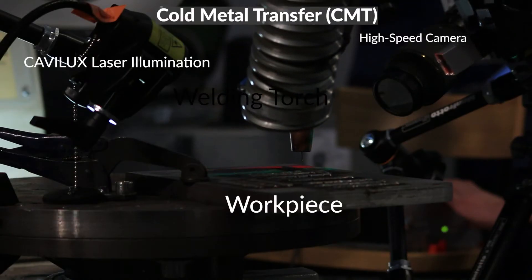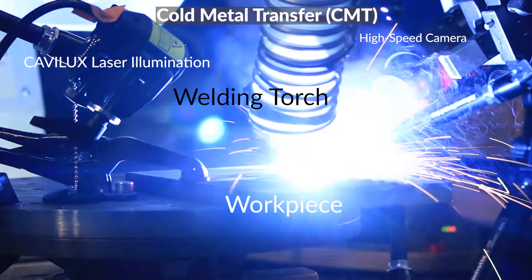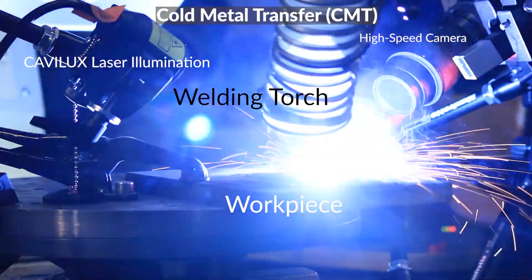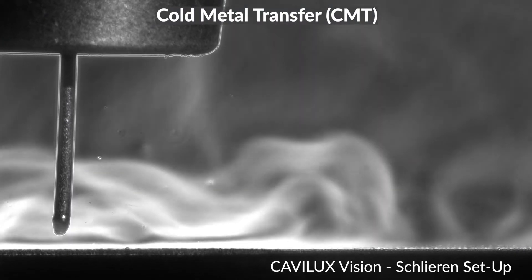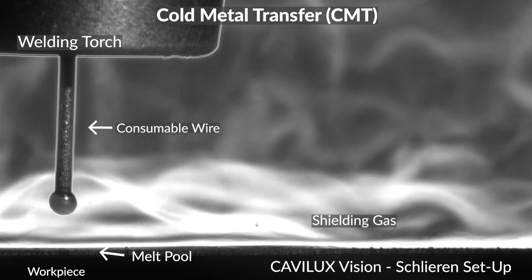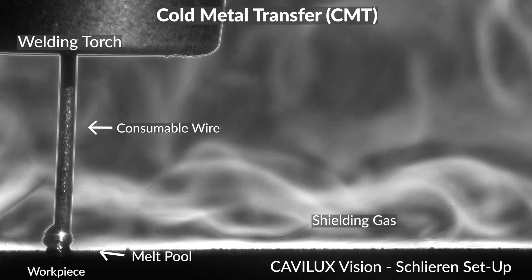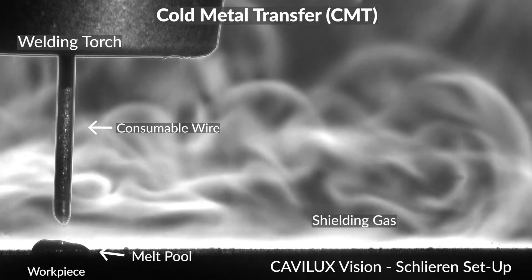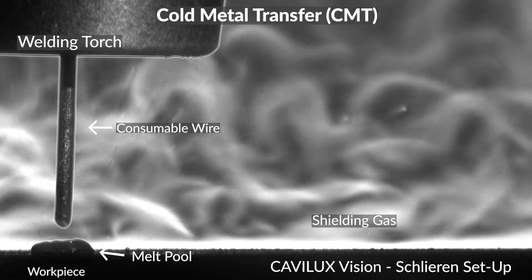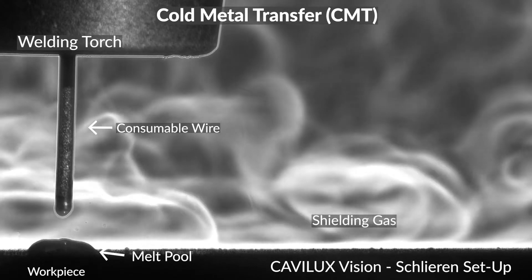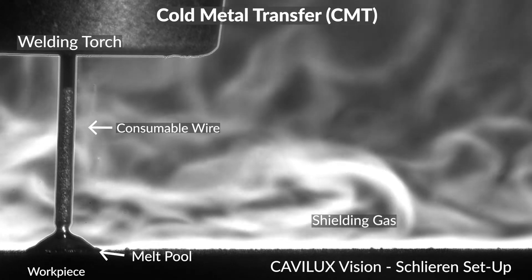Cold Metal Transfer, or CMT, differs from conventional GMAW mainly in terms of heat input and arc stability. In CMT, each short-circuit is detected and each detection signal causes the filler wire to retract from the welding, giving it time to cool before administering the next filler material drop. The method minimizes the amount of spatter and results in a smoother and stronger seam than the conventional GMAW method. CMT has been found to be superior to conventional GMAW, especially in welding of steel and aluminum.